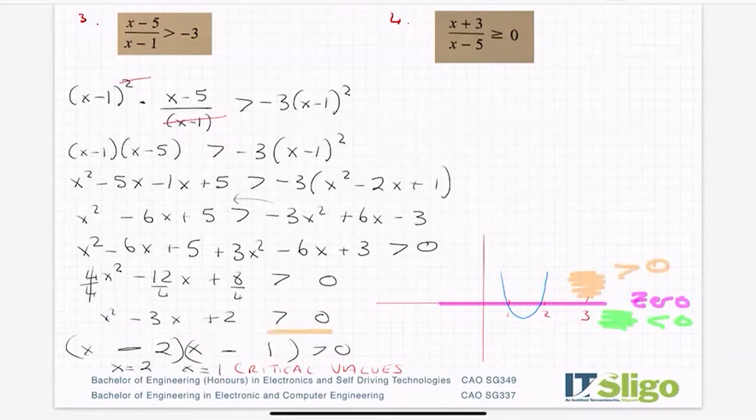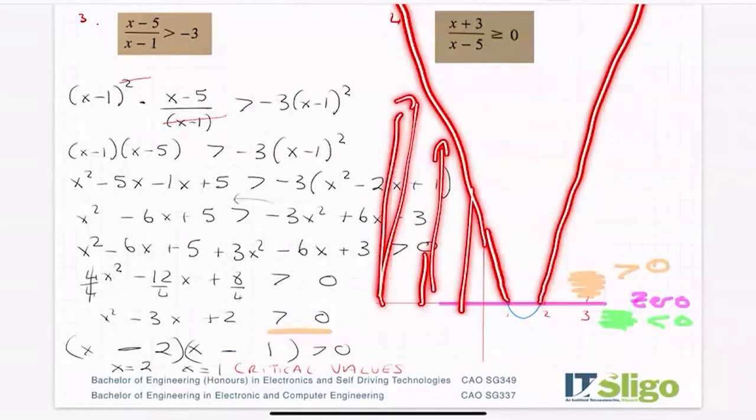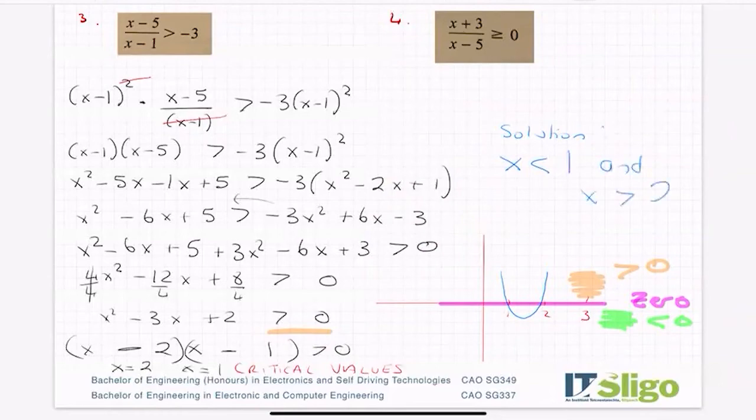And remember, these go on forever. So all of these x values, if I use them as solutions, I will get an answer to this sum that is greater than 0. So my solution, when x is less than 1 and when x is greater than 2.